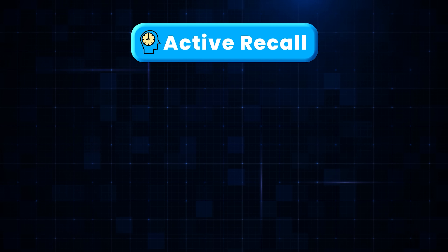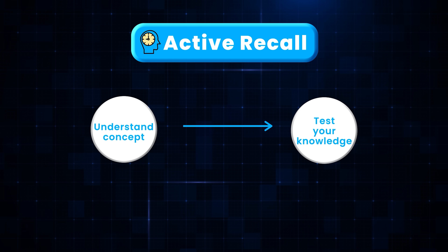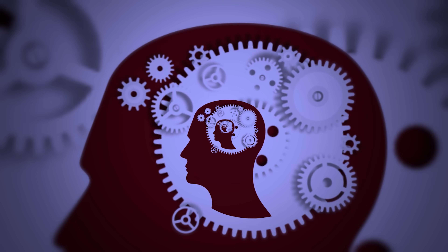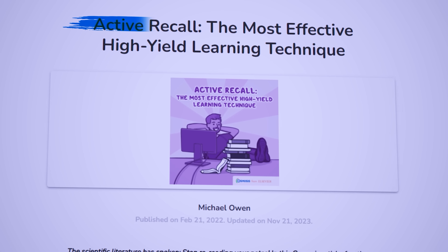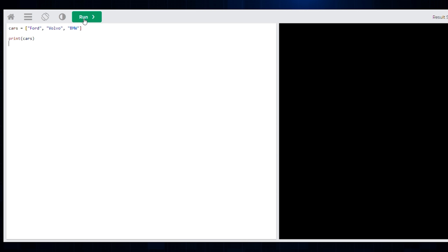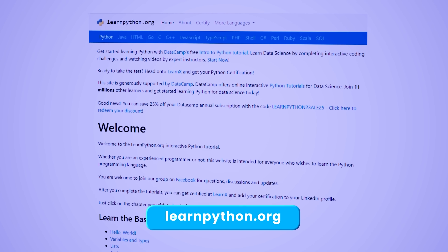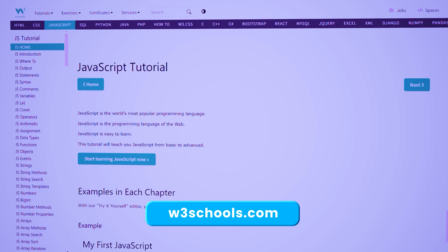The best way of learning programming is active recall. Instead of casually watching, in active recall you first understand a concept and then test yourself on what you just learned with exercises. This forces you to actively retrieve information from your brain. Numerous studies have shown that active recall is one of the best ways to retain what you are learning. Luckily, there are websites that teach and test you with interactive exercises. For Python, there's learnpython.org. For JavaScript, there's w3schools. There's also Codecademy — the first two are free, Codecademy may be paid. I'll leave all links in the description.